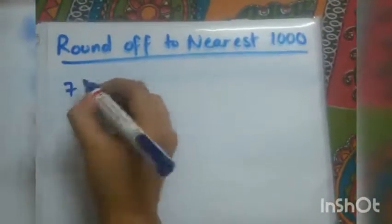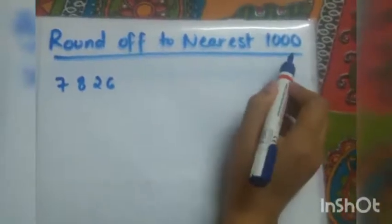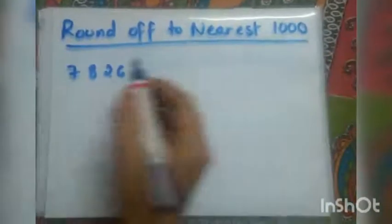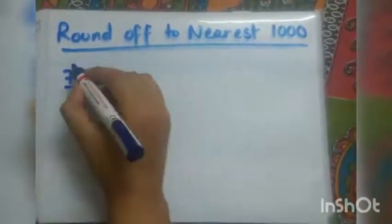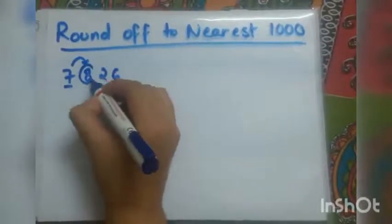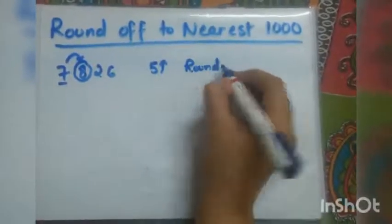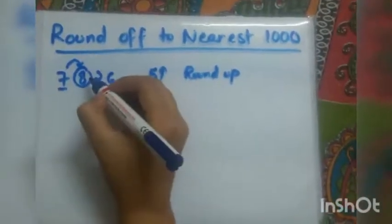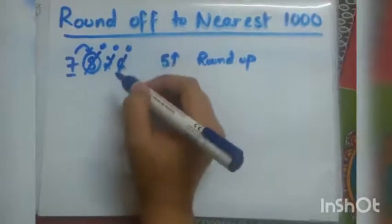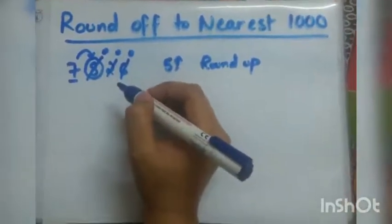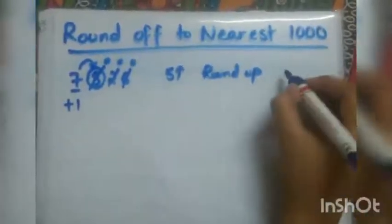We will first take the example of 7826. We need to round off to the nearest thousand, so we look at the number in the thousands place — that is 7. The number to the right of 7 is 8. Since 8 is greater than 5, we will do round up. In round up, all digits after the thousands place become zero, and the thousands digit gets plus one. So 7826 becomes 8000.